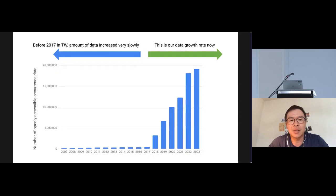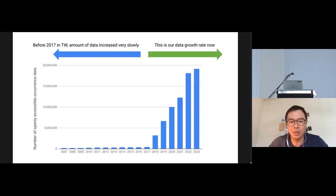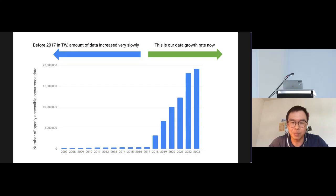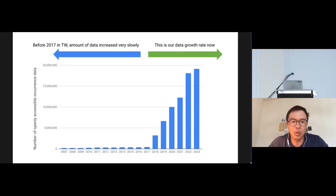But before 2017, we weren't doing that well. You can see from this bar chart of occurrence data in Taiwan that for around 10 years the data increased very slowly. Now our growth rate is looking quite good, and we're expecting to have more than 20 million data this year.